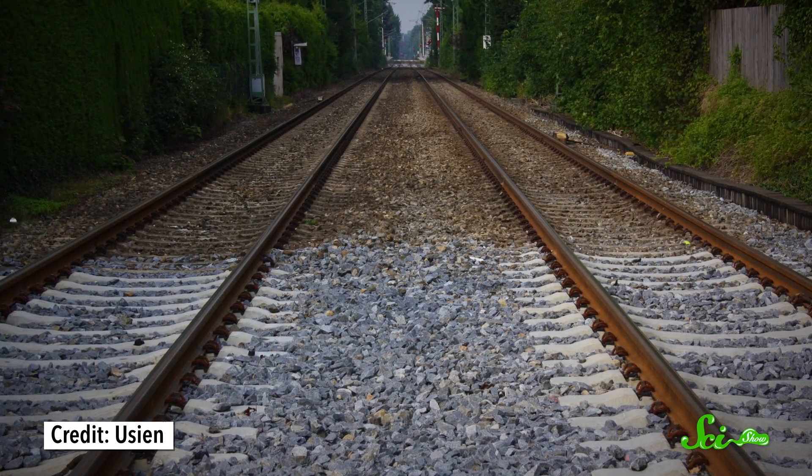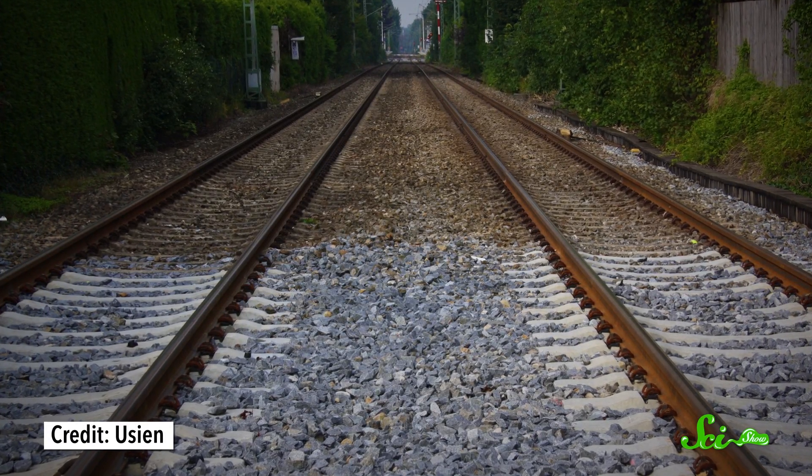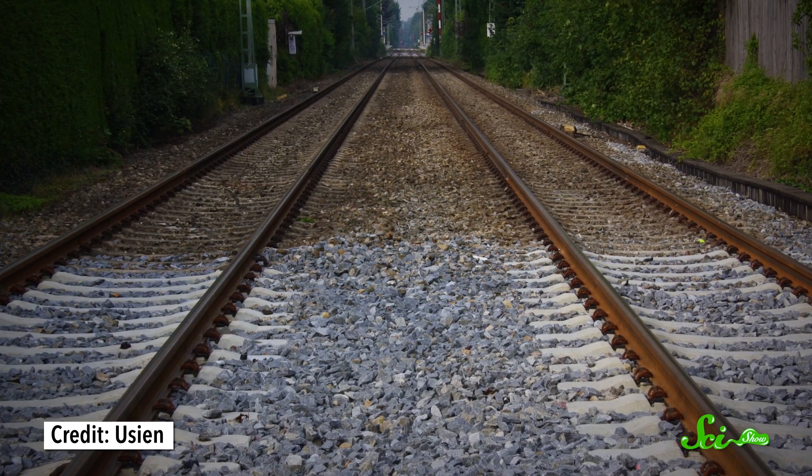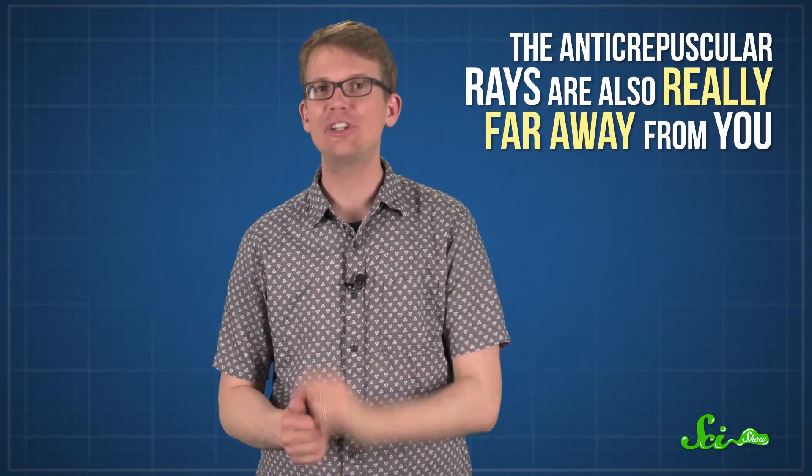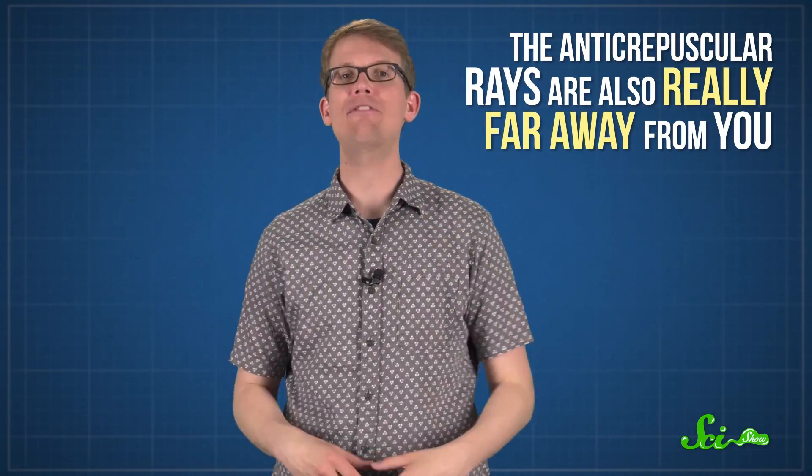Just like how train tracks look parallel when you're standing next to them, but they look like they're getting closer together the farther away they are from you. So those beginnings of crepuscular rays far away from you are like those distant train tracks that seem like there's hardly any space between them. Then, the rays directly above you are like the train tracks by your feet, so they look parallel. But the anti-crepuscular rays are also really far away from you. They're just as far away as the original ones. So they look like they're coming together just like the original crepuscular rays did.